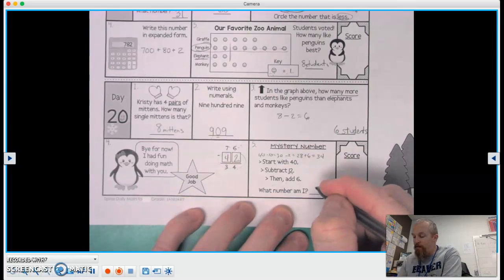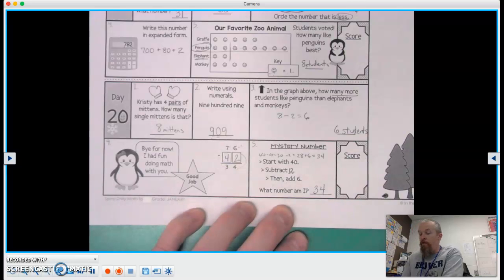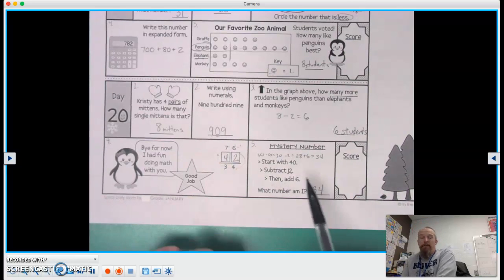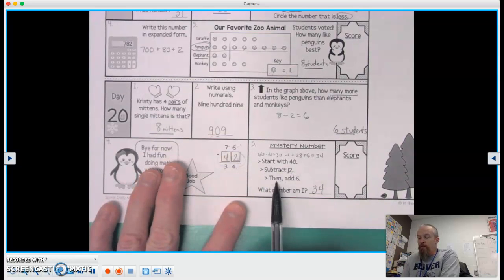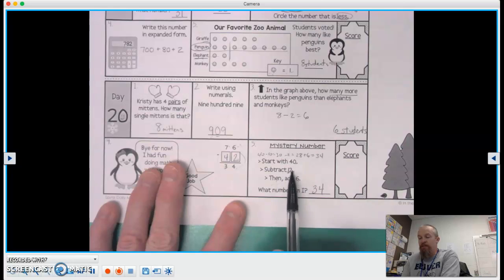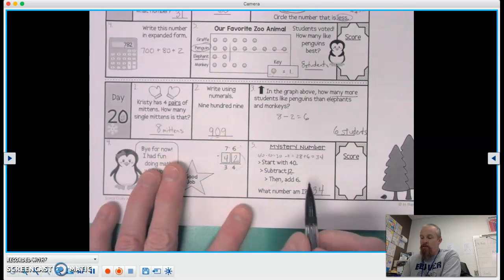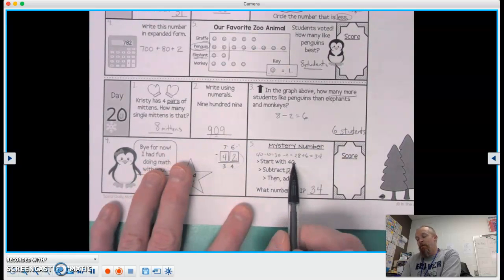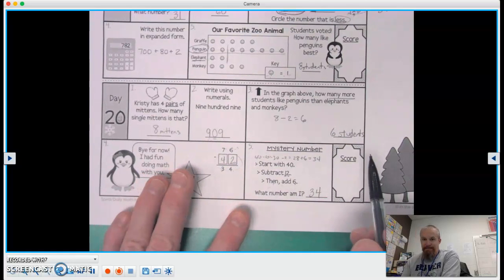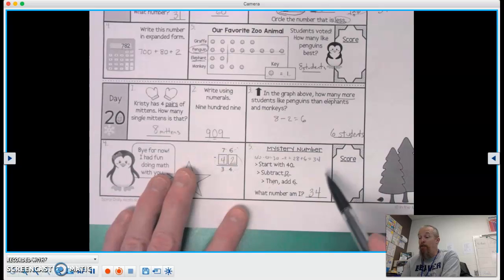What number am I? 34. Now, if you read through this ahead of time, you're also going to subtract 12, then add six. Well, you could just subtract six from that. Because 12 minus six is six. Okay? 40 minus six would be 34 also.